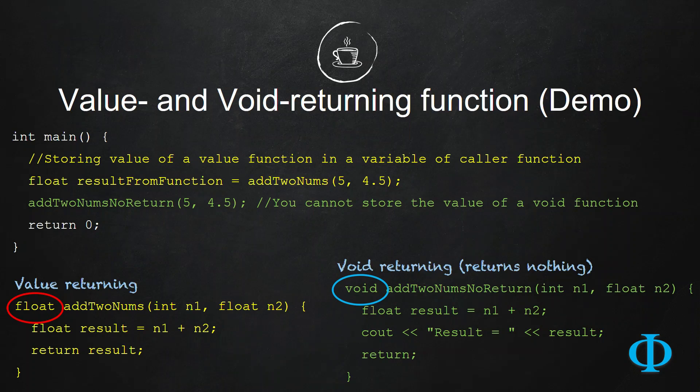So, in this video, we are going to learn about two different types of function in C++. One is value returning, the other is void returning function.